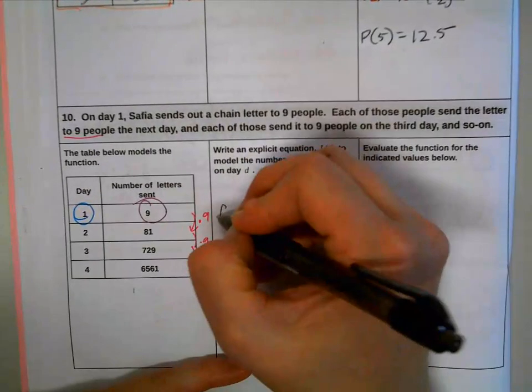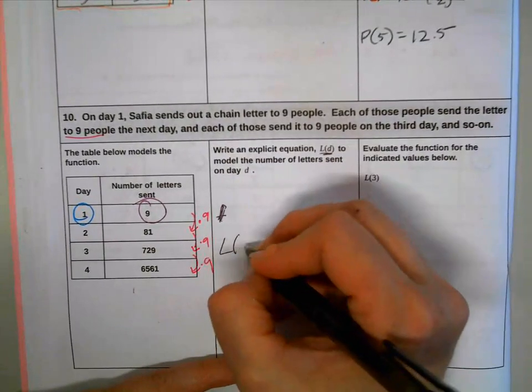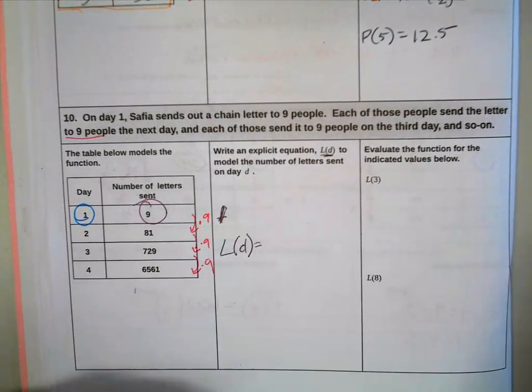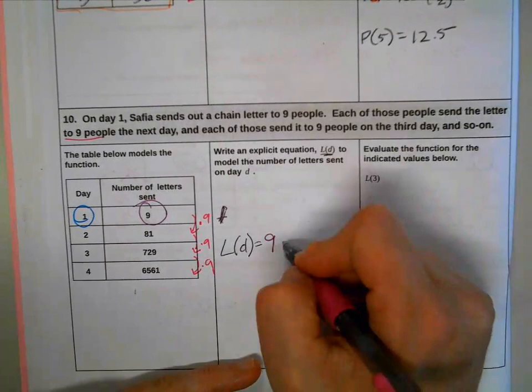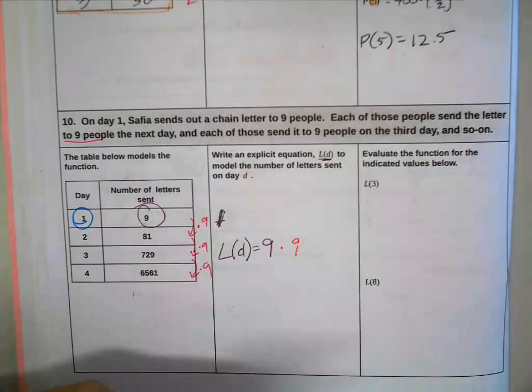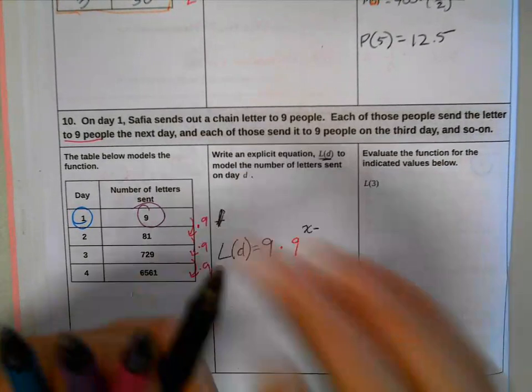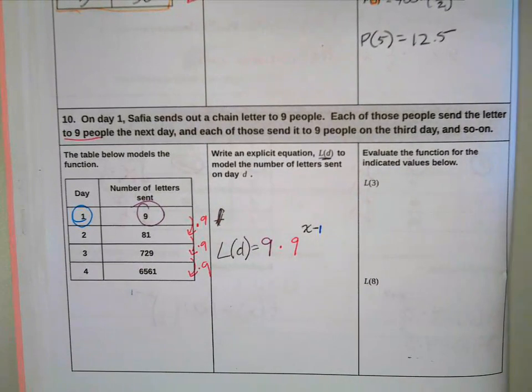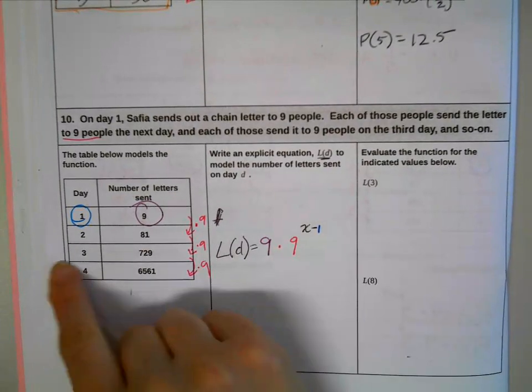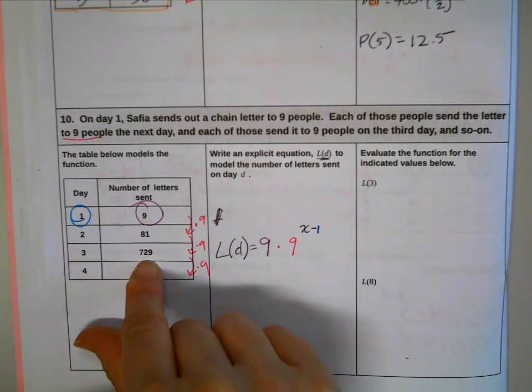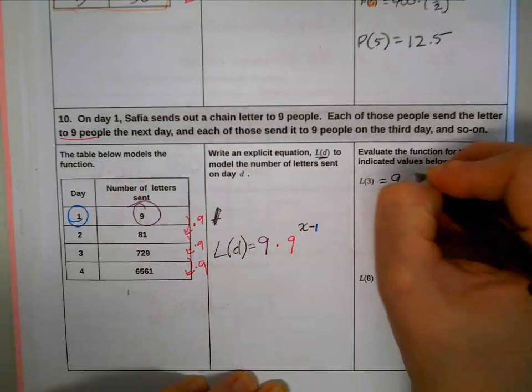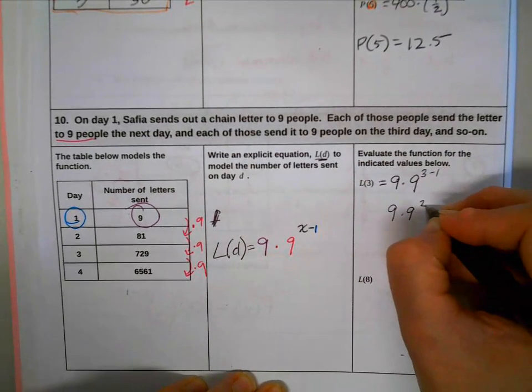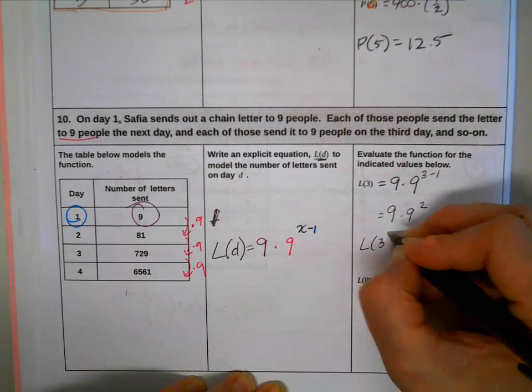And I'm ready. I'm going to say L of D, L of D - days and number of letters I guess is what those stand for - equals what we started with, which is nine, and we just kept on multiplying by nine to the x minus our starting input, which is a one, and here we have it. So we can check this real quick. We know it should end up being 729 because it says so on our table right here, but it's a good way to test your work. Nine times nine to the three minus one, which is the same thing as nine times nine squared, and that does equal 729.